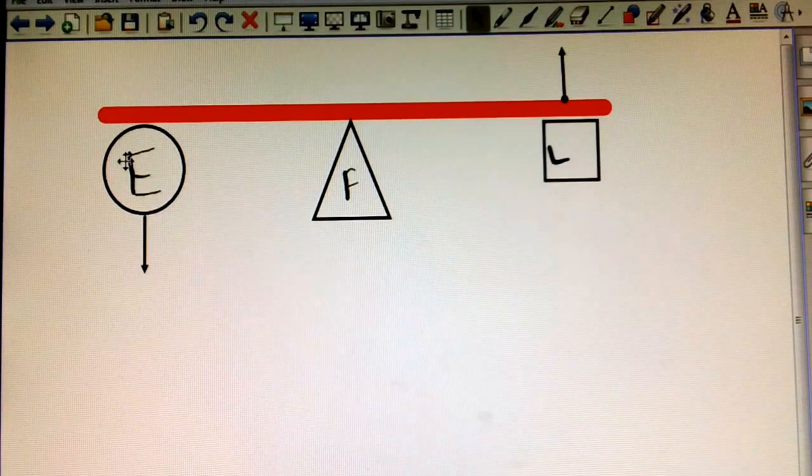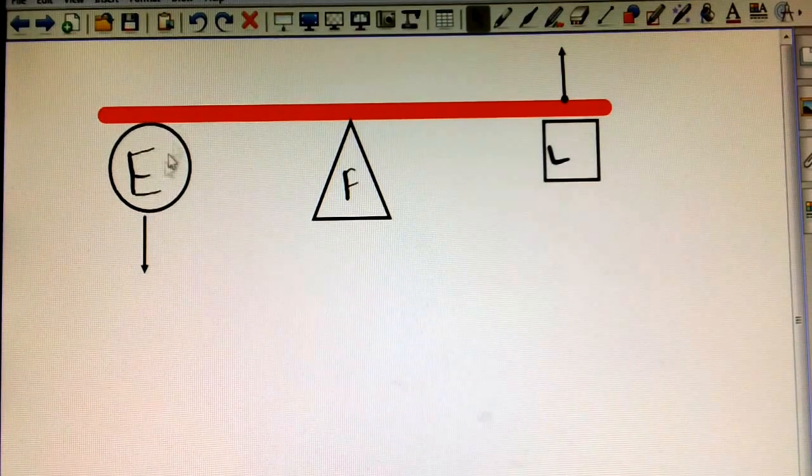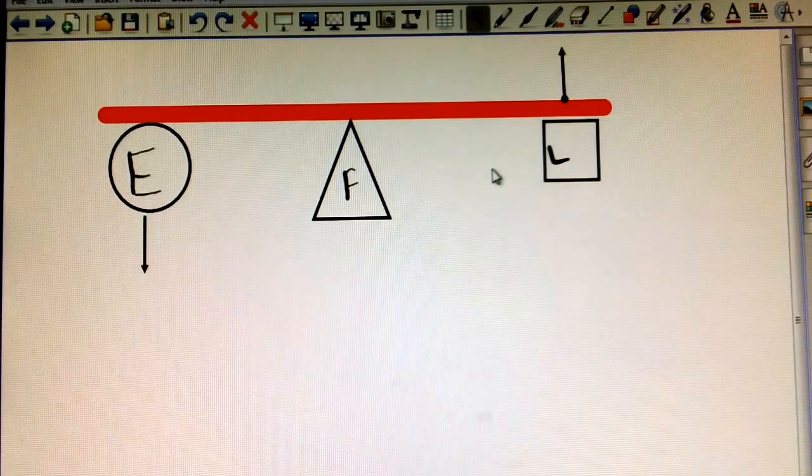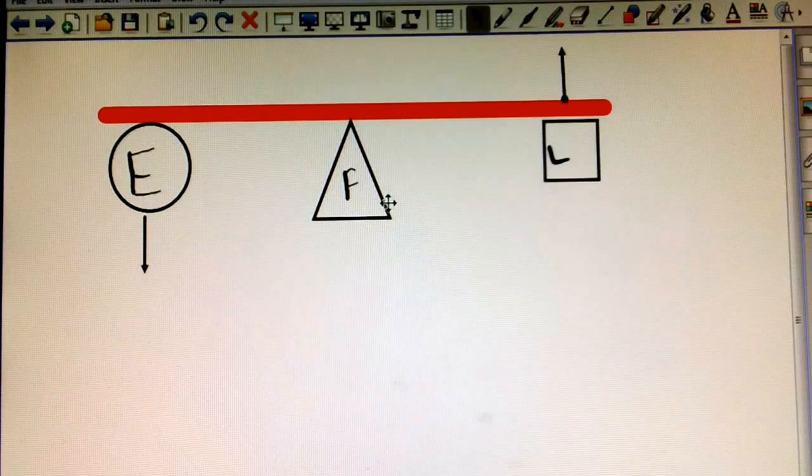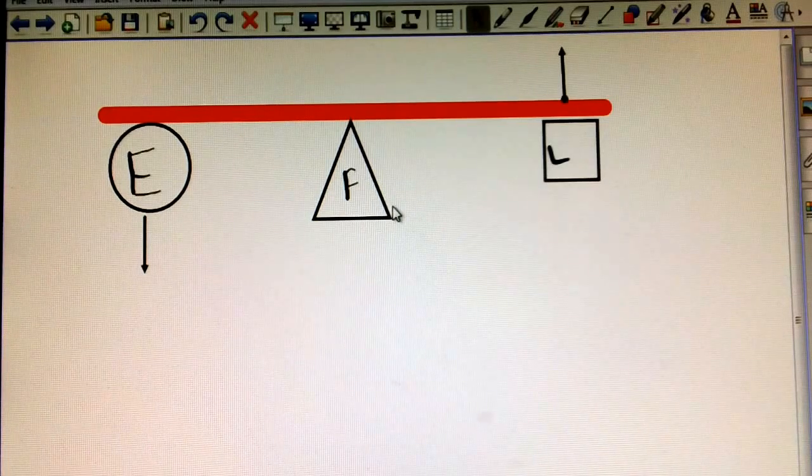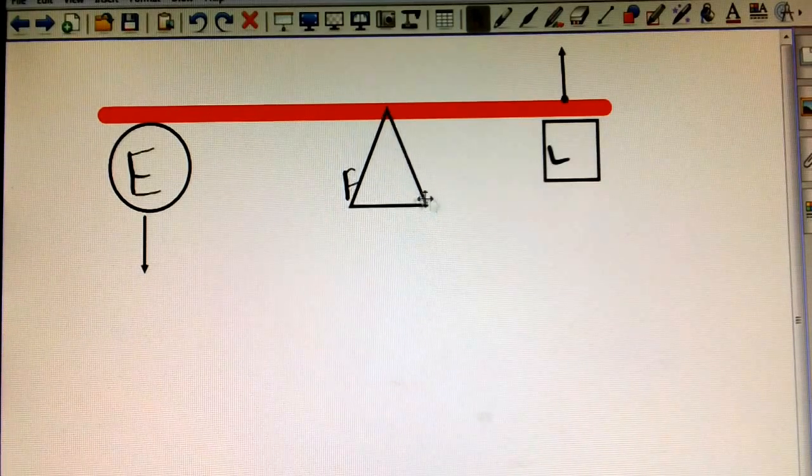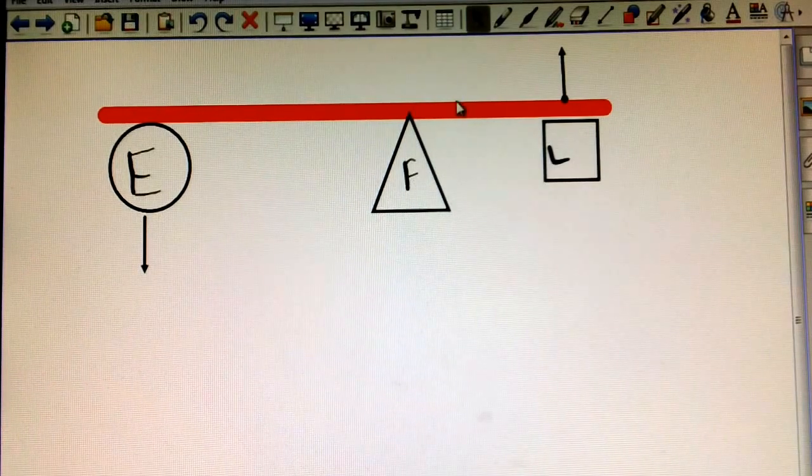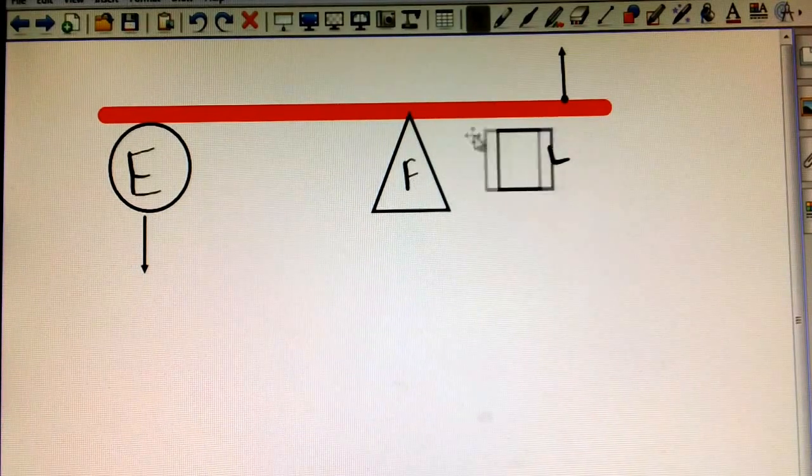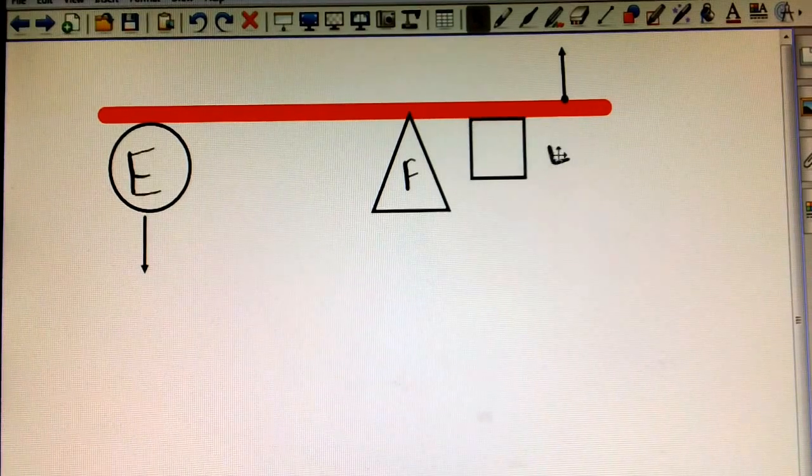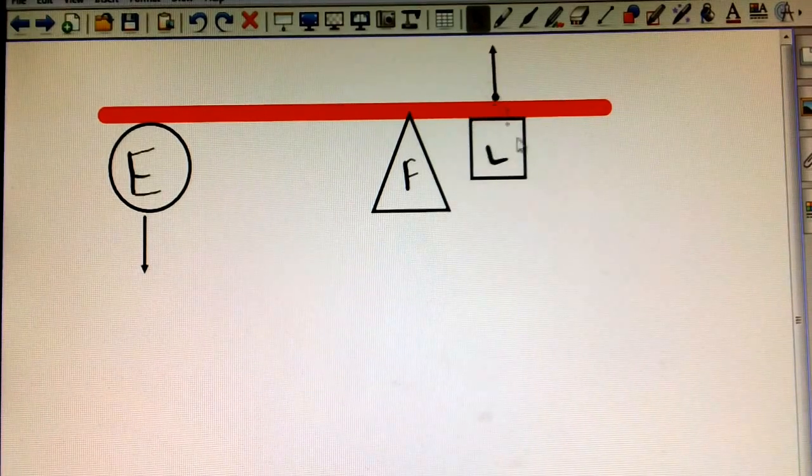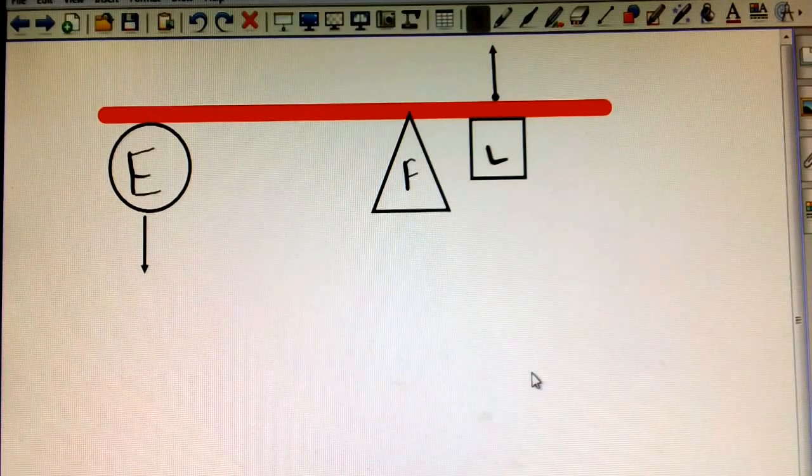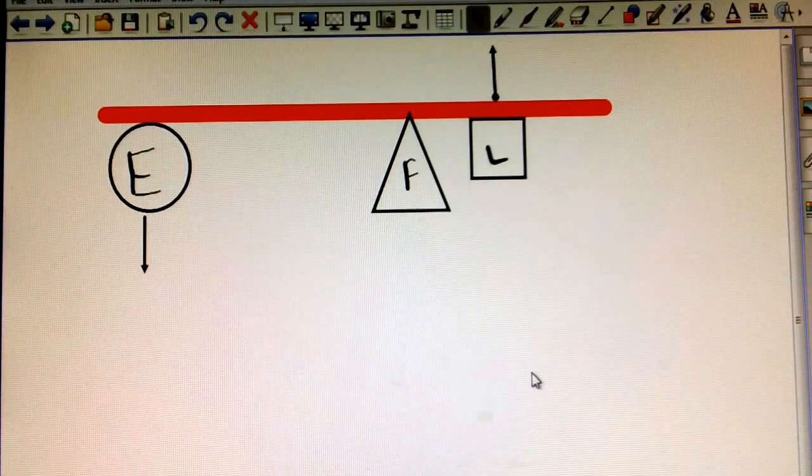But the fulcrum is actually where the nut or the screw is. And so depending on your scissors and the length of the blade, that could be closer to the load or farther from the load. It's part of why when we put paper into our scissors, they cut better if it's back a little further than when it's all the way out at the tip. So this might be a diagram for a pair of scissors.